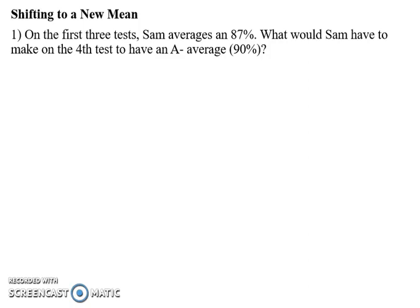In this problem, Sam has averaged 87% on the first three tests and is trying to see if it's possible to get up to 90%. What would need to be done on the fourth test? There are a couple ways we could do this problem.